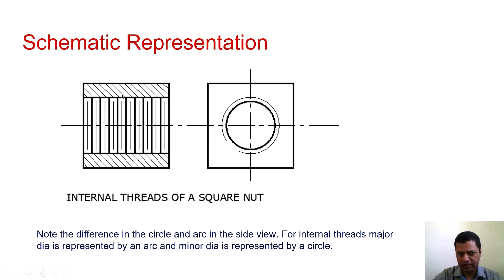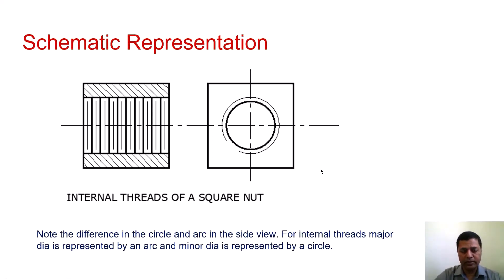This is the schematic representation for the internal threads of a square nut shown in sectional view. Again, the distance between two thick lines equals the pitch, the two thin lines are also spaced by one pitch, the length of the thick line is the major diameter, and the length of the thin line is the minor diameter. For the internal thread representation, the arrangement is reversed: the inside circle is a complete circle and the outside one is an arc — exactly opposite to the external thread. The inner circle is the minor diameter and the outer arc is the major diameter.